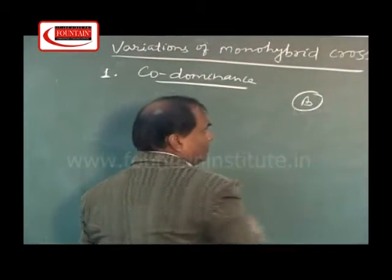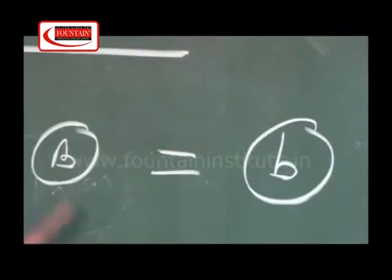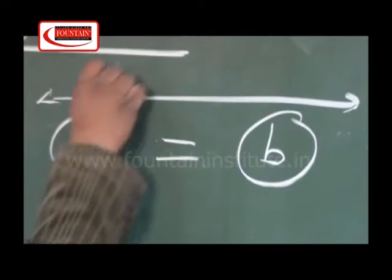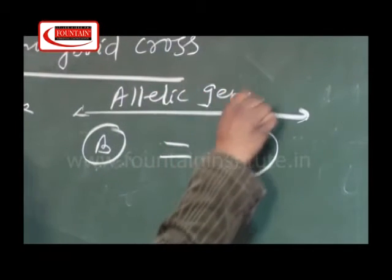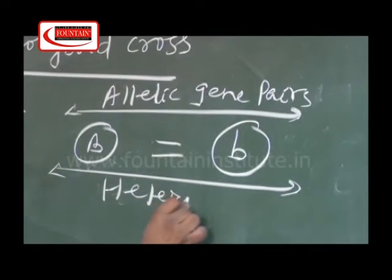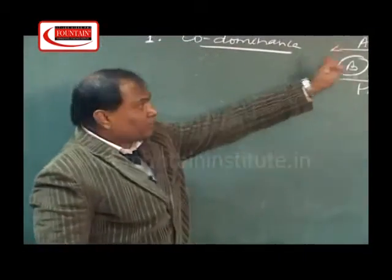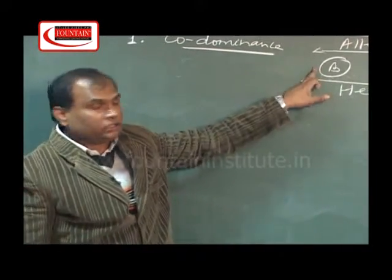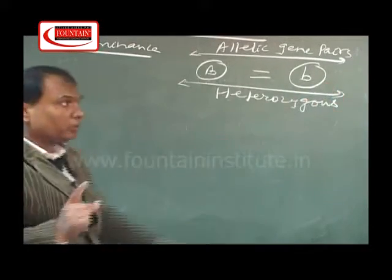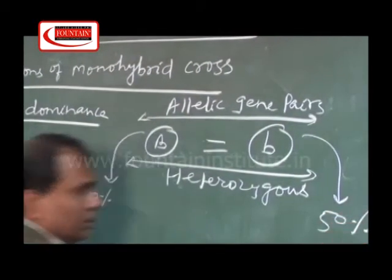Suppose capital R is one gene and small r is another gene. Co-dominance, or equal expression, is denoted by an equals sign. This is an allelic gene pair in a heterozygous condition. In the case of dominance, expression of one allele is 100% and the other is 0%, but in co-dominance the expression of both alleles will be 50% each.